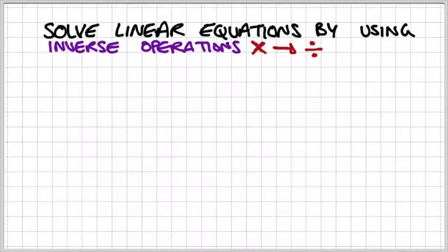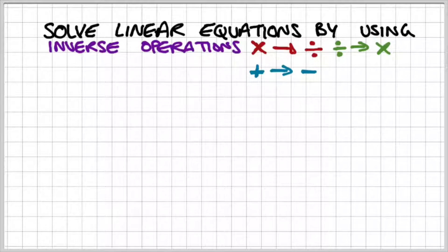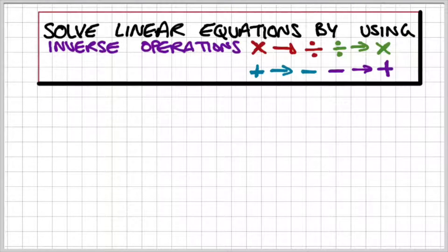So very quickly, the inverse of multiplication is division. The inverse of division would be multiplication. The inverse of addition would be subtraction, and the inverse of subtraction, therefore, would be addition.